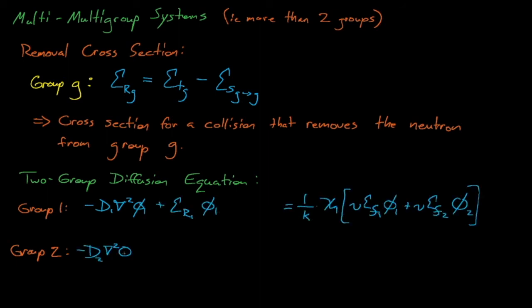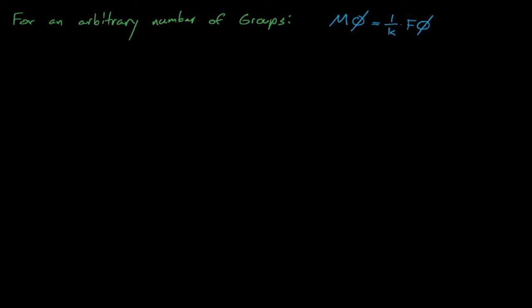Defining this removal cross-section simplifies things when we write the diffusion equations for a multigroup system. Recall that for two-group systems, we develop diffusion equations for fast group 1 and thermal group 2 neutrons, with leakage terms, a fission source, and a scattering source, updated to use the removal cross-section. This substitution significantly simplifies how we write the scattering source for multigroup equations. Let's derive the multigroup diffusion equations for a system that uses an arbitrary number of groups, using matrix algebra to simplify things. In operator notation, our diffusion equation equals M operating on phi, which equals 1 over the eigenvalue times F operating on phi, where M and F are the neutron loss and fission operators, respectively.